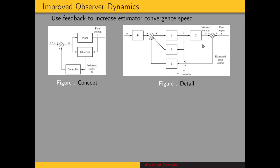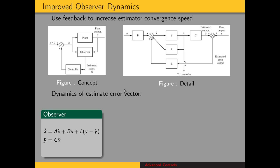In detail, what that looks like is shown in this picture. Here we have our observer, which is a model of the plant, with the input matrix, the state matrix, and our estimate of the state vector. We have an estimated output coming from our observer model. The plant output goes to a summing junction, so we're feeding back the difference between the actual output and our estimated output, and that is multiplied by the gain matrix L and fed back into our state. Here is the equation for this observer with feedback: A times our estimate for the state, plus B times U, plus L times the difference between our estimated output and the true output. The output equation is unchanged.